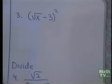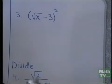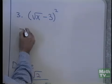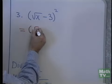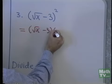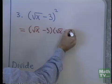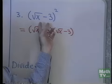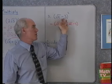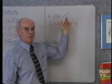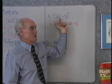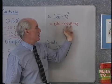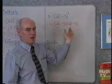Let's look at another problem. I have square root x minus 3, that quantity squared. Now that means square root x minus 3, times square root x minus 3. If you write it out this way, it'll keep you from making that mistake where you square the first term and square the last term. That would be the wrong answer to say that this was x plus 9. We need to multiply it out just like they were binomials.